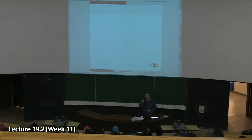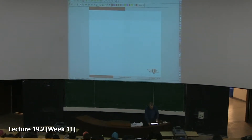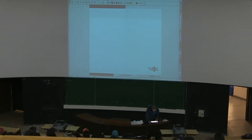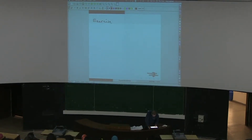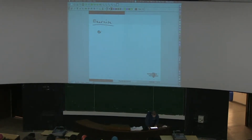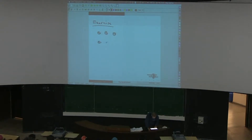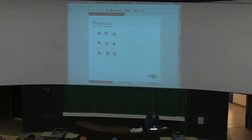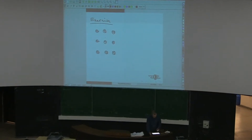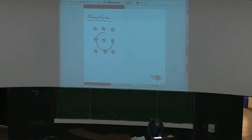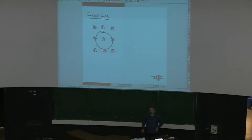Let's do a few examples about Lenz's rule and Faraday's law. Suppose we have a region of constant uniform magnetic field. We put a conducting ring in it and by some means we contract the ring — so it now has a new, smaller radius.